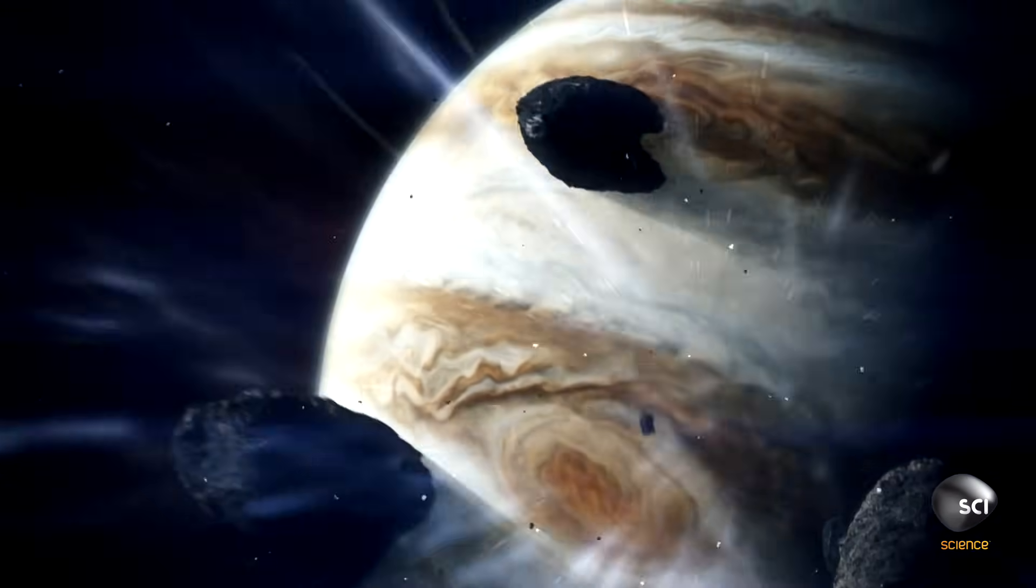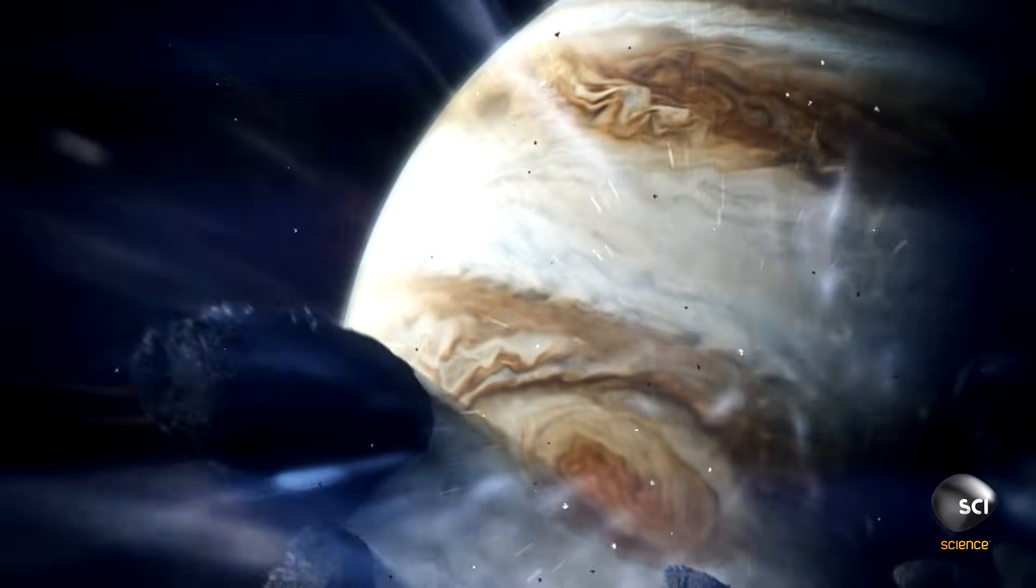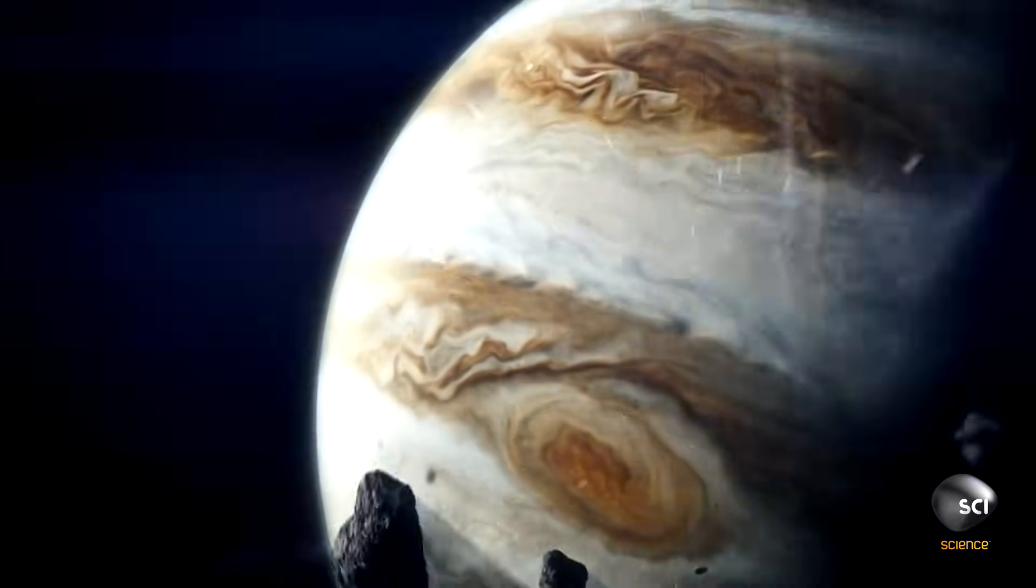Most of them got thrown out of the solar system forever, but the ones that didn't go on these big long million-year looping orbits and that's the Oort cloud. Billions of icy rocks were thrown out in all directions until a ball of debris formed around the whole solar system.